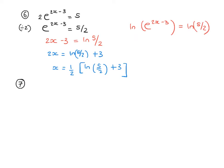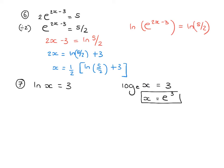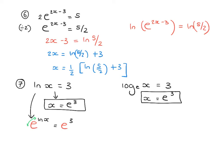Now equations that start with ln. For ln of x equals 3: this is the same as log to the base e of x equals 3, so x equals e to the power of 3. Some may write it down directly; others may include the intermediate step e to the power of ln x equals e to the power of 3, and since e and ln are inverses, the left side is simply x. So x equals e cubed.